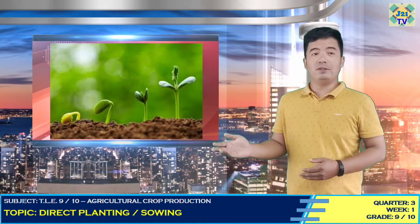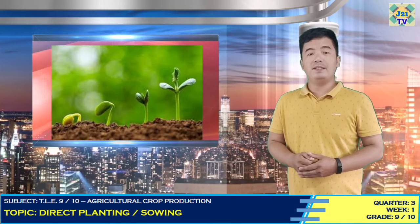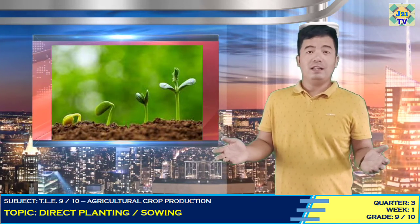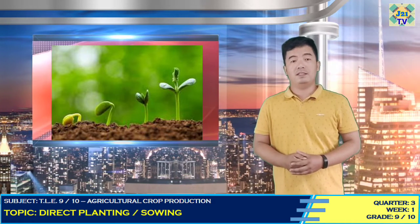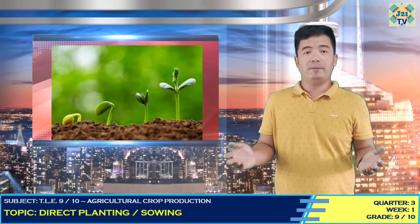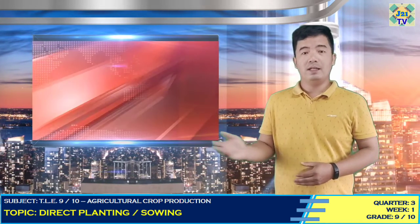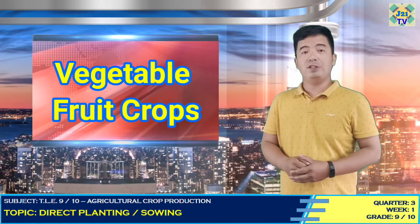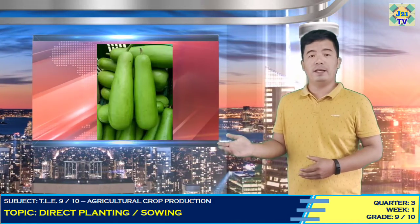Seeds are sown either directly in the field or in nurseries where they are raised and then transplanted later. Generally, large seeds are planted directly in the ground or in a garden. Some vegetable crops do not need special care and are planted directly in the ground. Some of these plants are legumes like bongo and beets, and vegetable fruit crops like okra, squash, and patola.